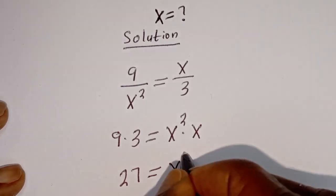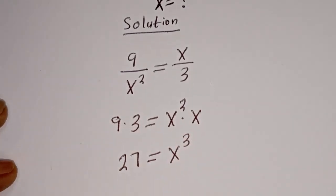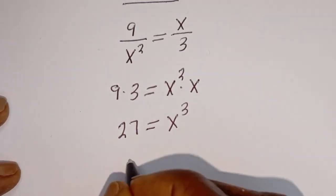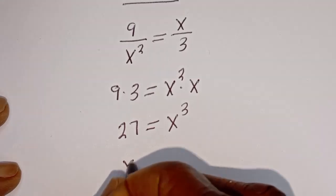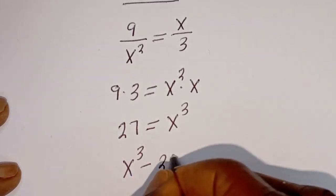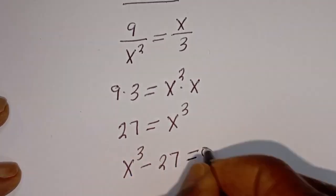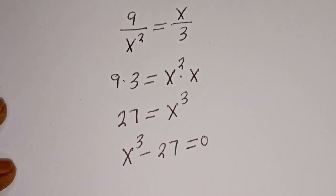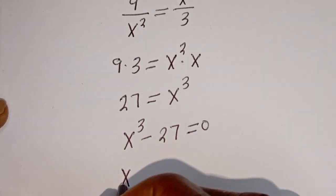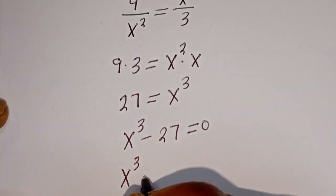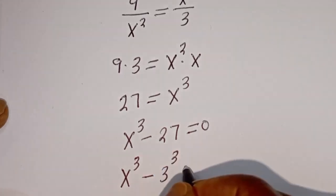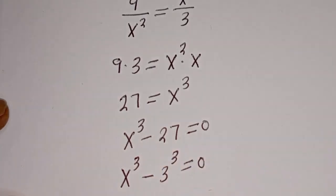This is s to the power of 3. Then this can be written as s to the power of 3 minus 27 is equal to 0. And here we have s to the power of 3, and 27 can be written as 3 to the power of 3, so s³ minus 3³ is equal to 0.